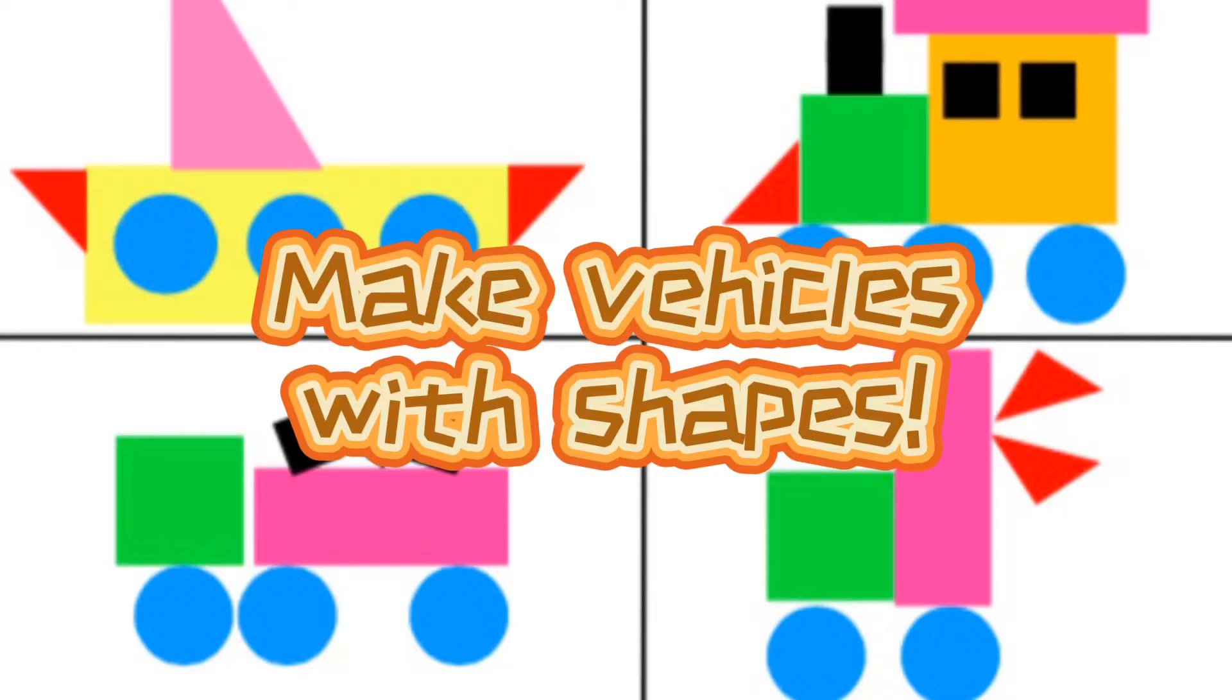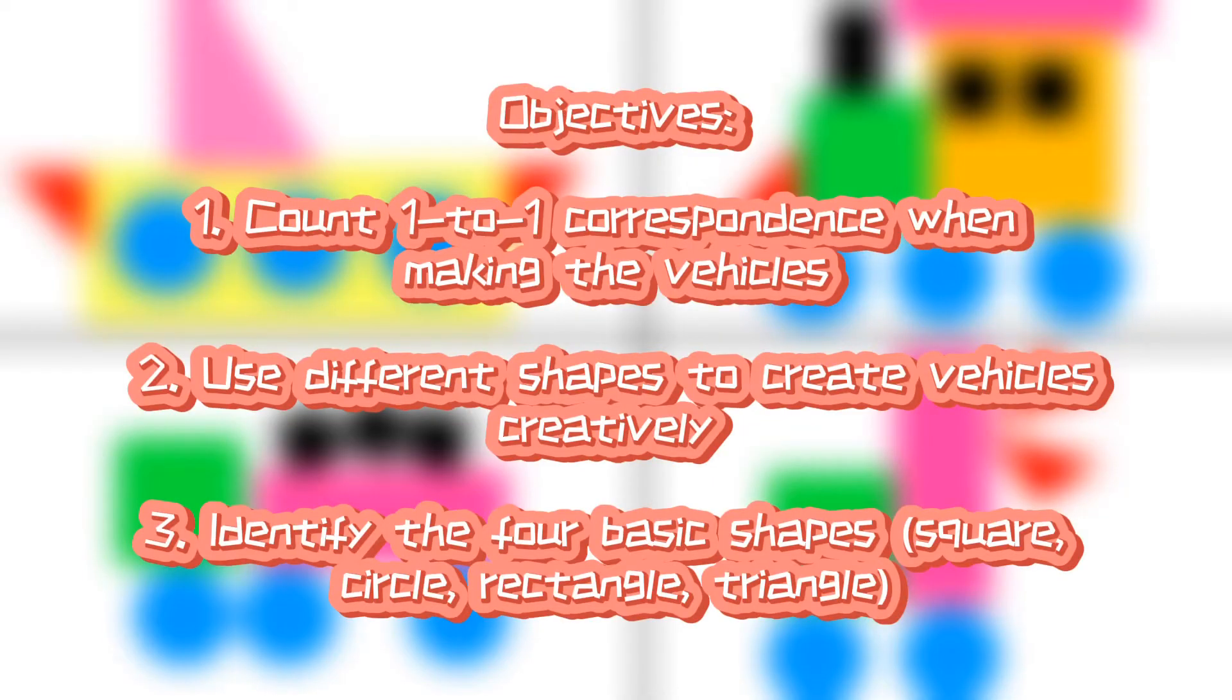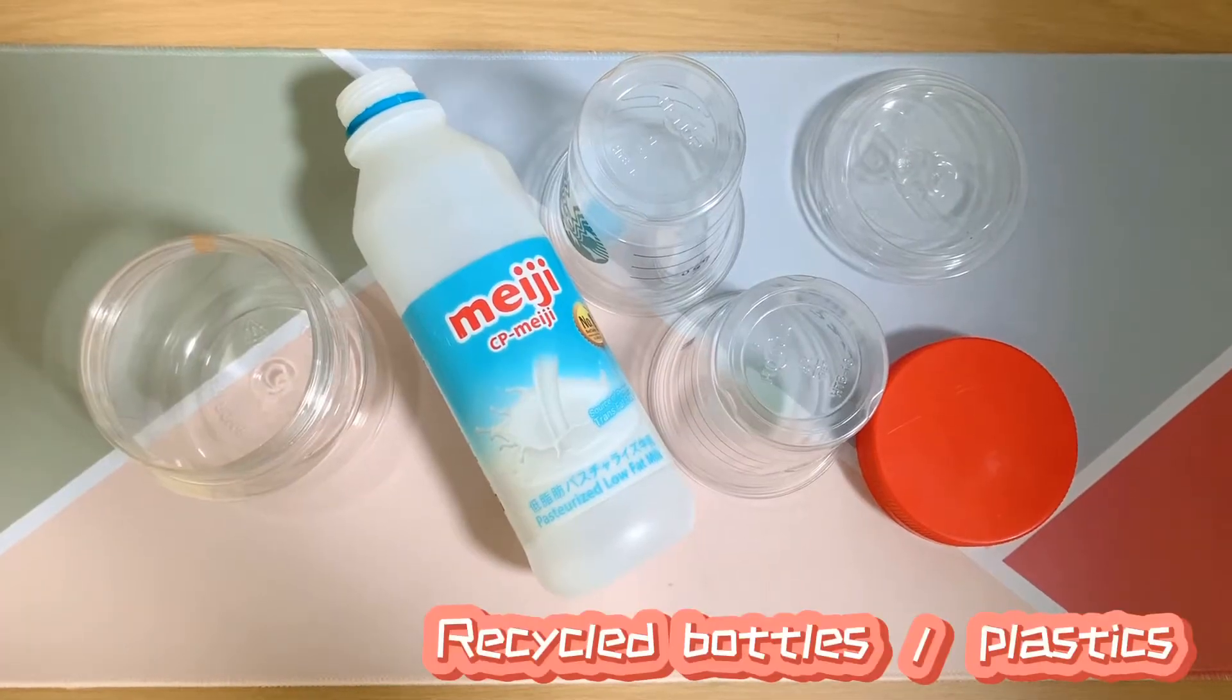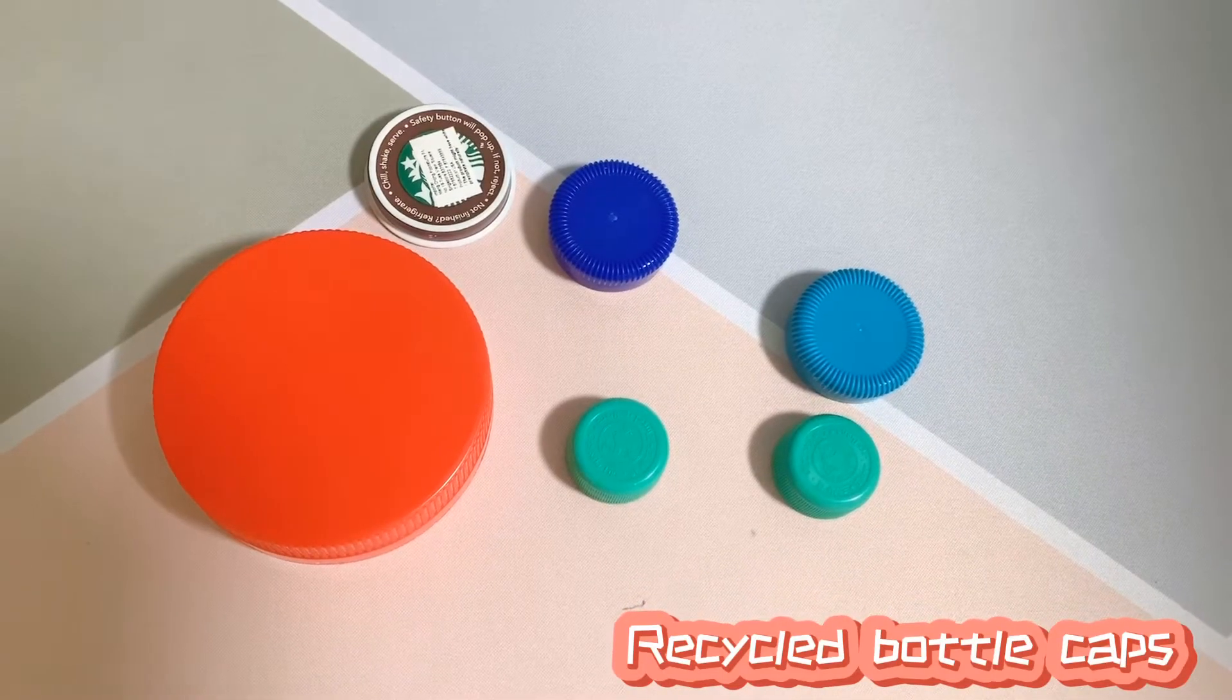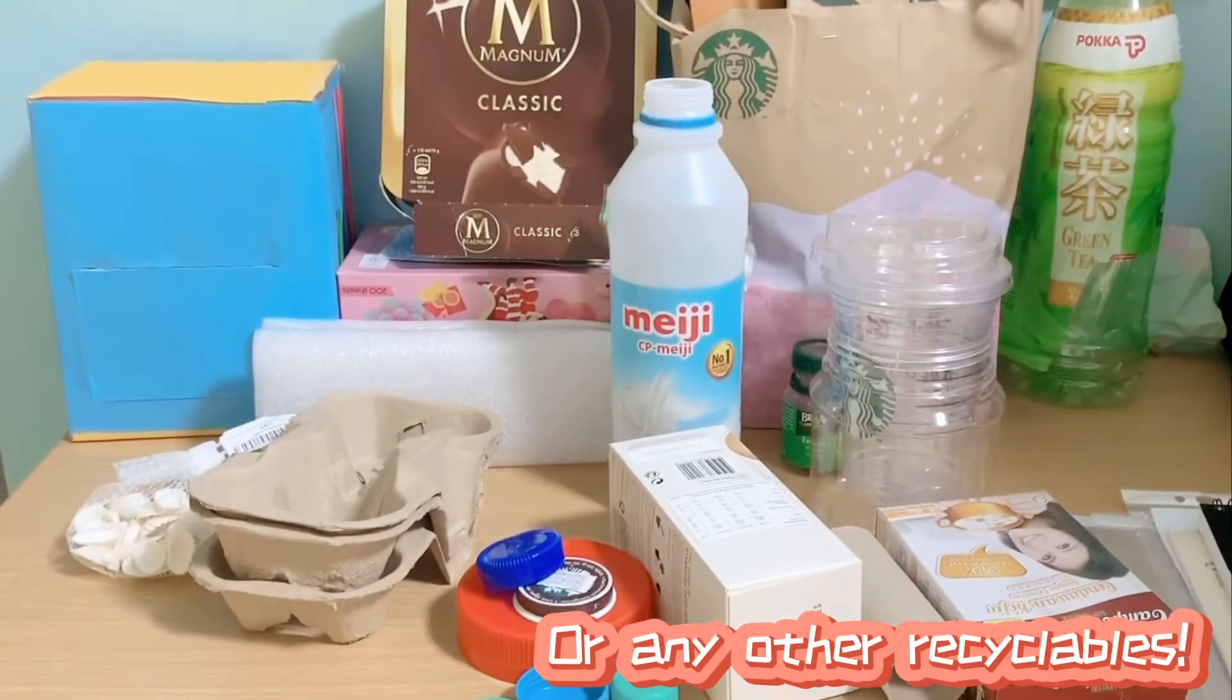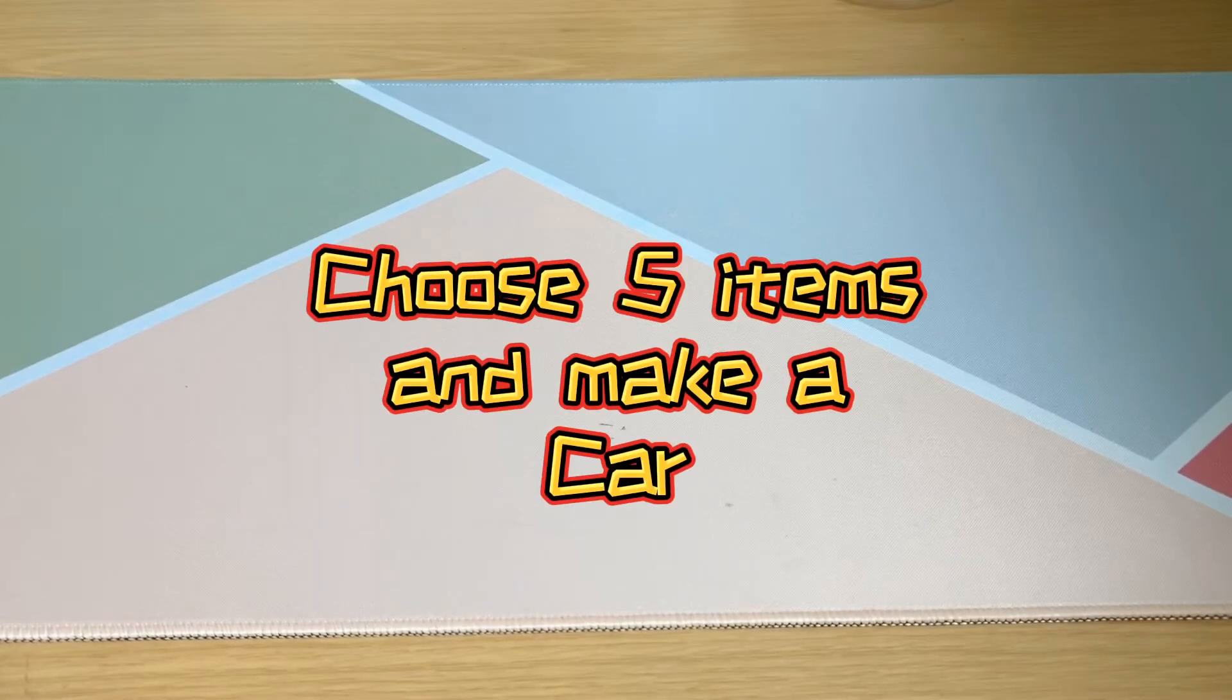We are shapes, you can see us everywhere. I'm a square, I'm a square, you can see me everywhere. I have four sides, I'm a square. I'm a circle, I'm a circle. Choose 5 items and make...